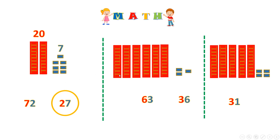Next one. Let's count the tens: 1, 2, 3, 4, 5, 6 — I have 6 tens. And the ones: 1, 2, 3 — 6 tens and 3 ones. Is it 63 or 36? 6 tens is 60, and here I have 3 ones. So 60 plus 3 — great! — 63.